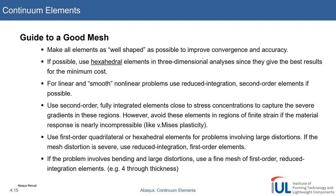Second-order fully integrated elements are good at stress concentrations and to capture severe gradients — but only do this if you don't want to spend a lot of elements in that region. However, at finite strains, so at large deformations, for nearly incompressible materials — remember, the von Mises type of plasticity is almost incompressible since it occurs at constant volume with zero volume loss and zero volume gain — this is per definition incompressible. So this is basically the main reason why these types of elements are rarely used in metal forming analysis.